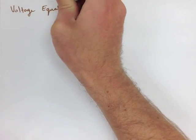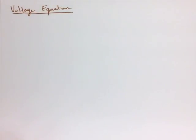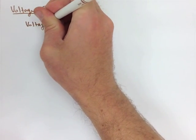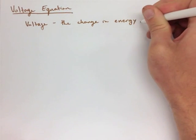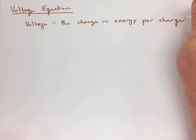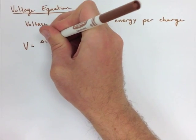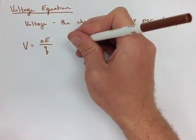Now, when we're looking at our voltage equation, we have to know what voltage actually is first. Voltage is the change in energy per charge. So, we have V equals delta E over Q, where V is the voltage, or potential difference, and it's measured in volts, or joules per coulomb.